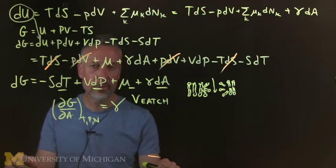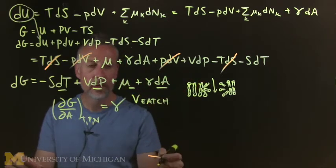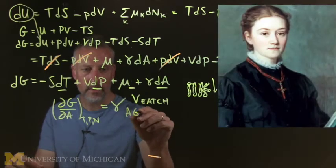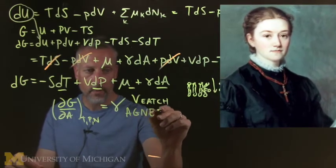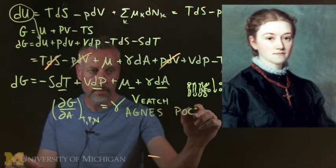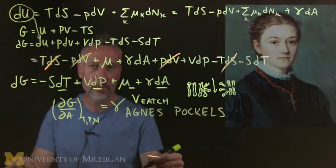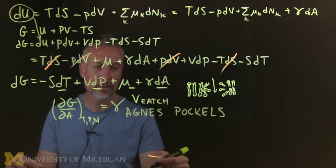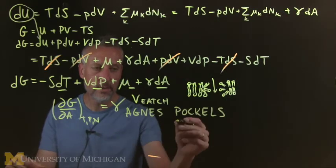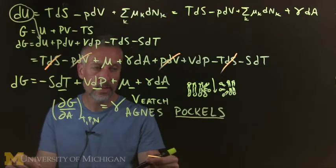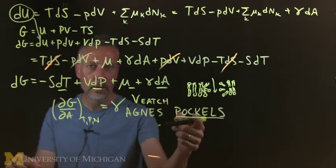If two molecules want to meet, it's a heck of a lot easier to find each other on a two-dimensional-like surface than in full three-dimensional space. So membranes are organizing, but they also minimize the space of which you have to search. Well, it turns out the first person to study this was somebody I never heard of before, and her name was Agnes Pockels.